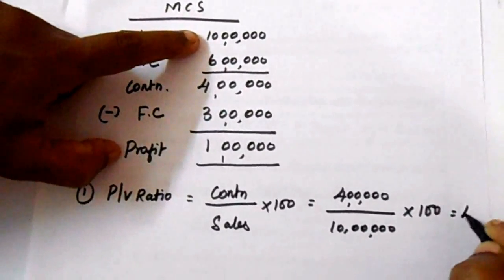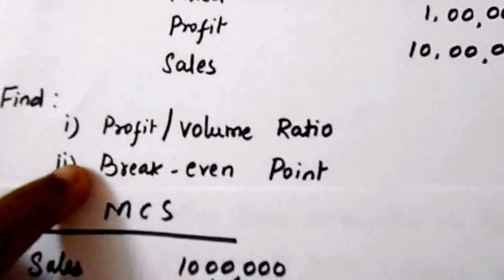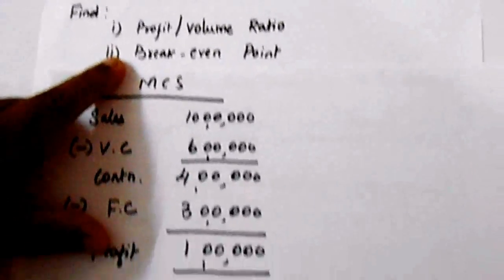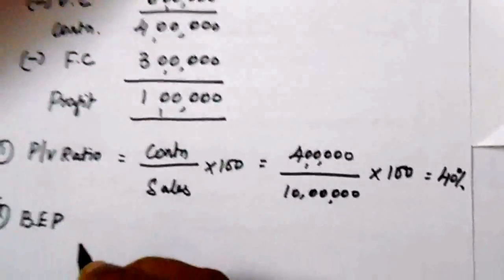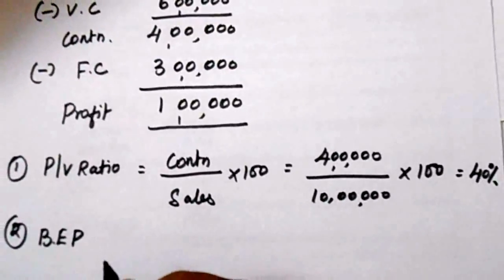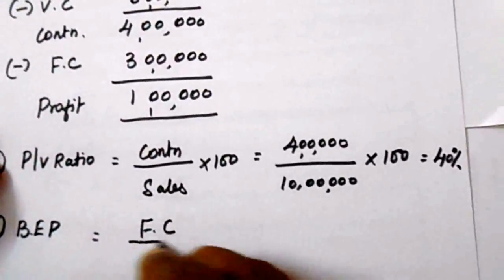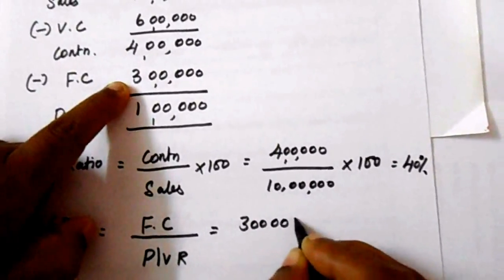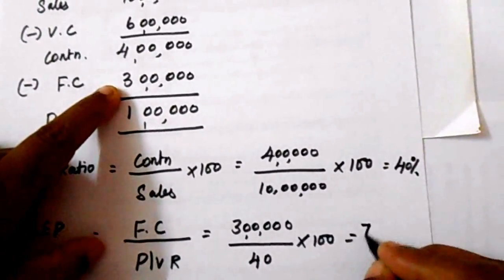First solution — PV ratio. The formula is: Contribution divided by Sales, multiplied by 100. Contribution is sales minus variable cost = 4 lakhs. Divided by sales of 10 lakhs, multiplied by 100 = 40%. So PV ratio is 40%. Second solution — break-even point. Break-even means no profit and no loss. The formula for break-even point in rupees is: Fixed Cost divided by PV ratio = 3 lakhs divided by 40% = 7 lakhs 50 thousand.